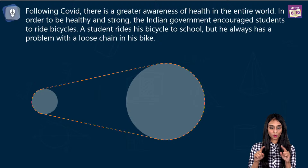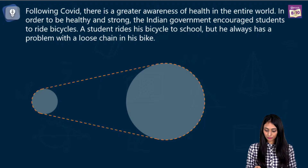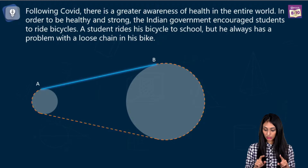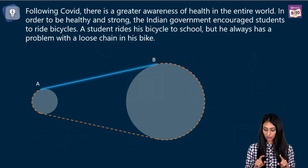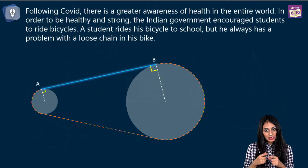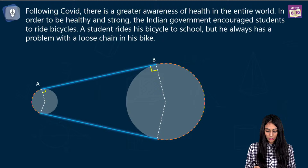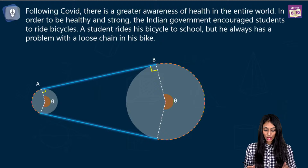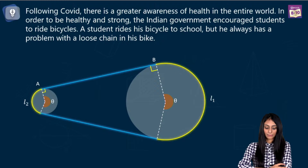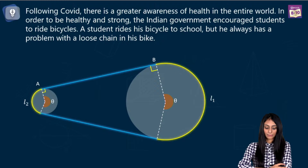AB is the tangent to both circles. Radius and tangent are always perpendicular at the point of contact — this is from the circles chapter. The angle theta is subtended by the major arc of the bigger sprocket. Let L1 be the length of arc on the bigger sprocket and L2 the length on the smaller one.